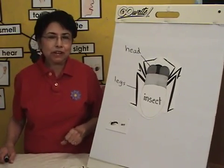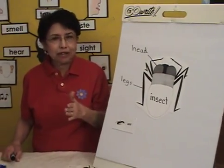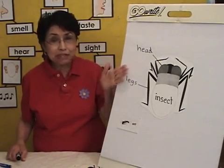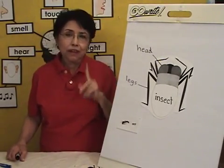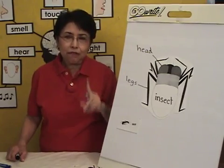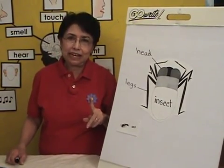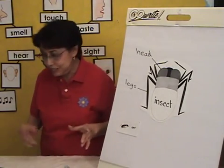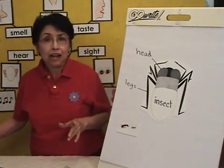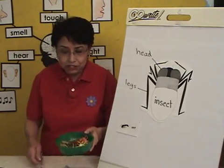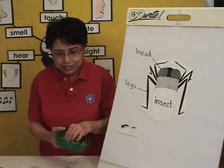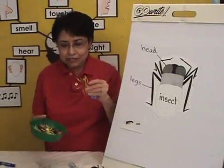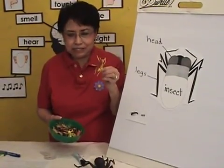This leads us into the next step of my introduction — and of course this took a little bit longer than I'm taking right now. Every lesson needs to have an engagement. So for the engagement on the introduction of insects, I am going to give every child a plastic insect and pass them around.